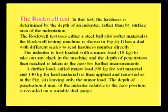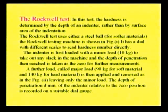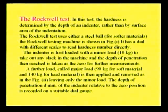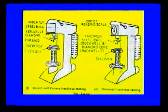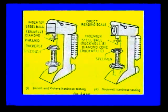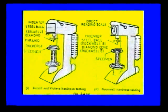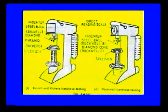A further load called the major load — 90 kg for soft materials and 140 kg for hard materials — is applied. Both a minor load and a major load are applied on the specimen, and the depth of penetration of the indenter relative to the zero position is determined and recorded on a suitable dial gauge. In this test, the included angle for the diamond indenter is 120 degrees, where the minor load and major load are applied sequentially and the depth of penetration (small d) is calculated.